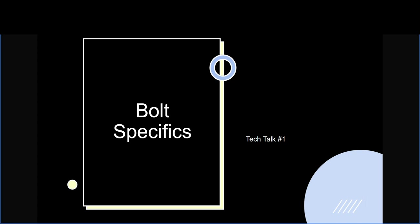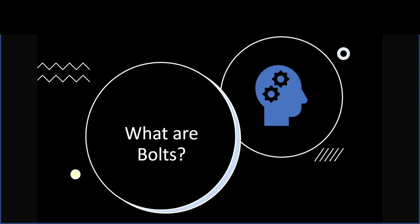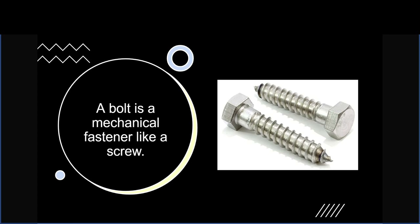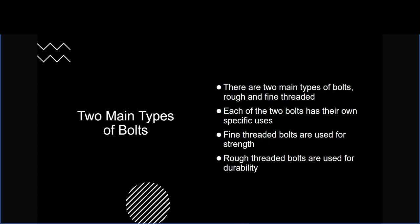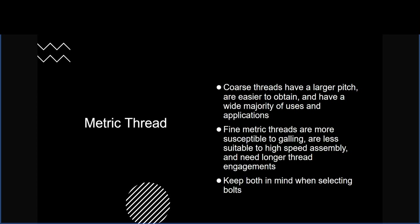A bolt is a mechanical fastener like a screw, but there are two main types when dealing with fine details: rough and fine threaded bolts. Each has specific uses — fine bolts are used for strength and rough threaded bolts are used for durability. Metric thread coarse starts have a larger pitch, are easier to attain, and have a wide majority of uses and applications. However, fine metric threads are more susceptible to galling and less suitable for high-speed assembly as they take longer to get nuts, bolts, and washers ready, and they require longer thread engagements.